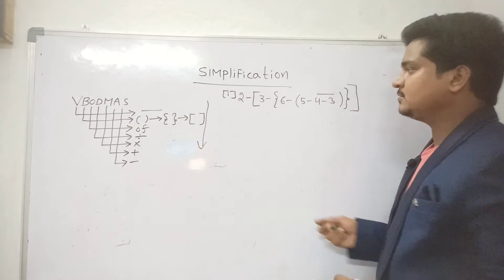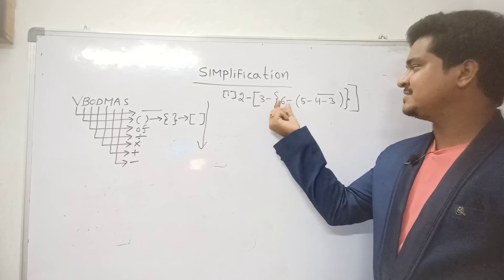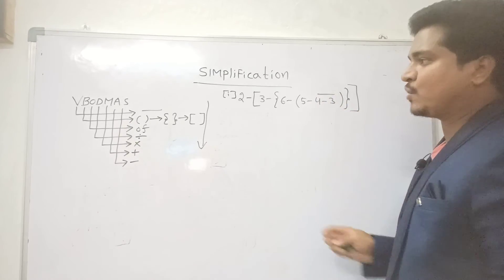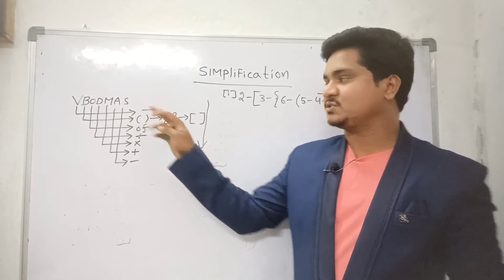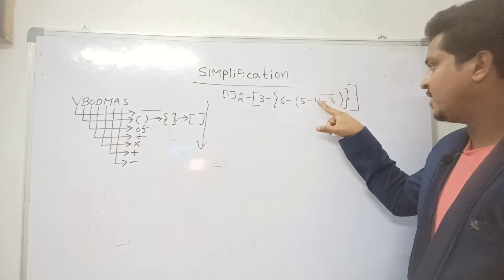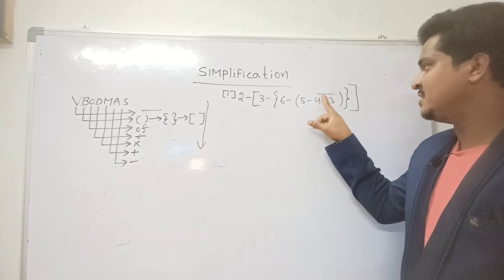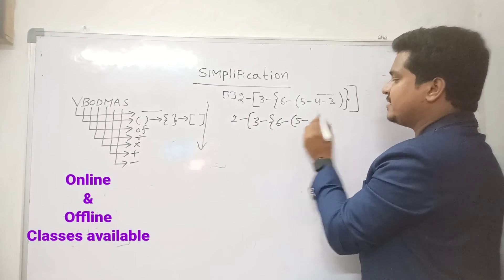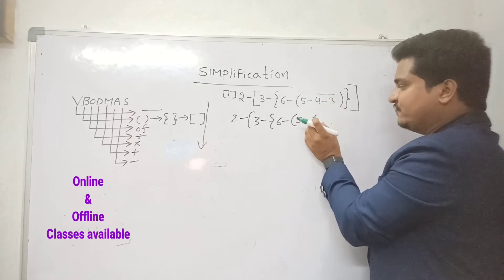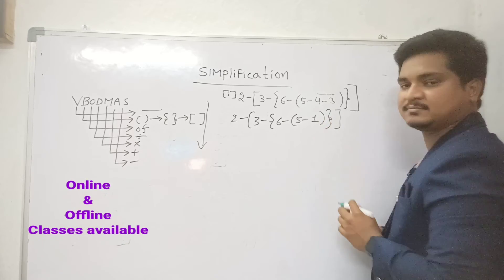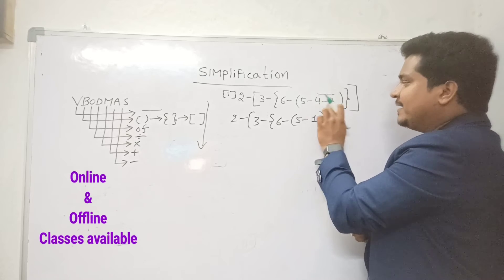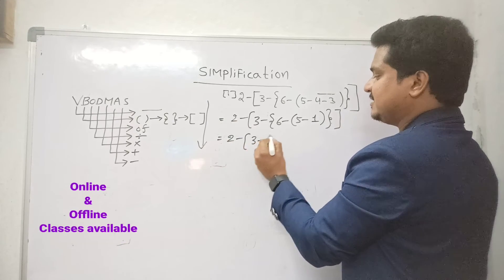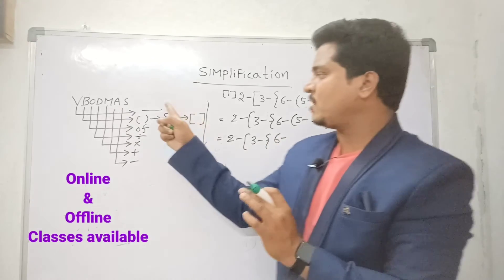VBODMAS example: 2 − [3 − {6 − (5 − ‾4−3‾)}]. According to VBODMAS rule, simplify the bar value first. Under the bar we have 4 − 3. No need to consider the sign of 4 outside the bar. 4 − 3 = 1. So bar is eliminated and we write: 2 − [3 − {6 − (5 − 1)}].